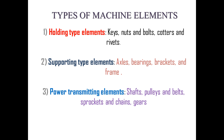Machine elements are classified into three types based on their function. First, holding type machine elements: these hold machine components together. Examples include keys, nuts, bolts, rivets, and cutters. Nuts and bolts are commonly used to hold machine parts together, so they fall into the category of holding type machine elements.